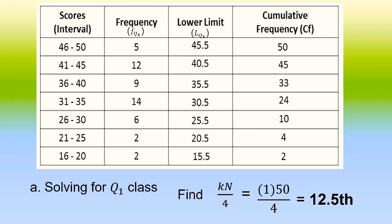Let us focus on the column for less-than cumulative frequency. To locate the class of Q sub 1, the value of less-than cumulative frequency must be greater than or equal to 12.5. The Q sub 1 class is the class interval from 31 to 35, because the value of less-than cumulative frequency of that class is greater than or equal to 12.5.